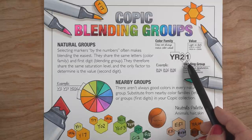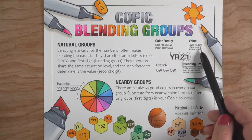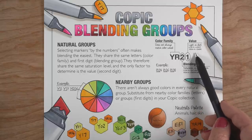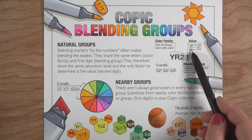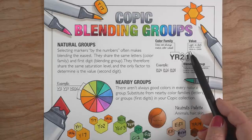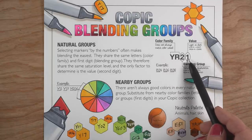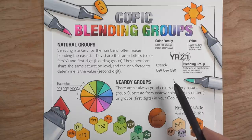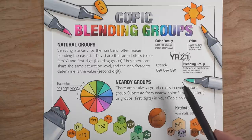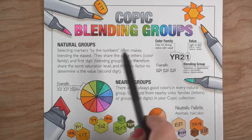If it's a really high first digit, the color is going to be grayed out and desaturated. The last digit tells you how light or dark the color is — a low number is a light color, a high number is a dark color. A whole bunch of zeros means it's a super light color.